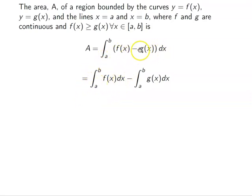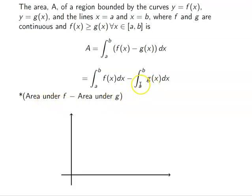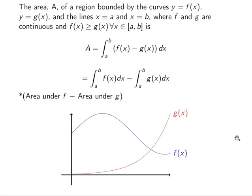We can use the law of distribution of integrals and distribute across the subtraction sign, thinking of it as two separate integrals. Alternatively, we can just subtract the functions and integrate that. What we're really looking at is the area under f minus the area under g.